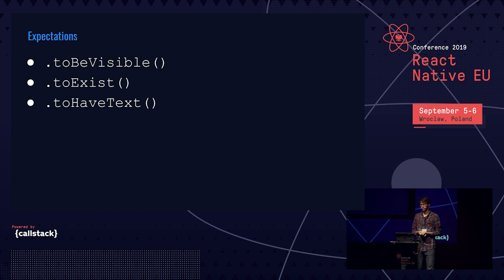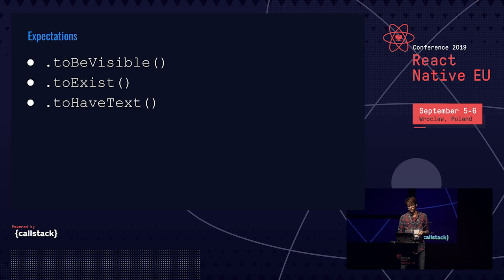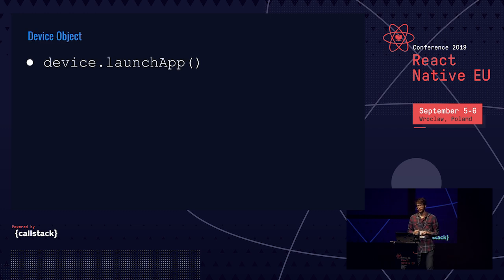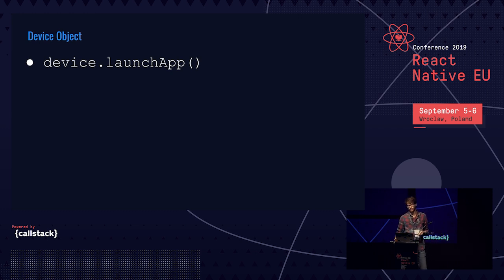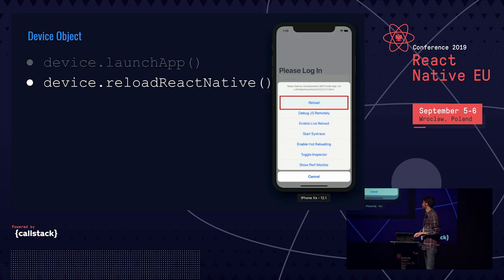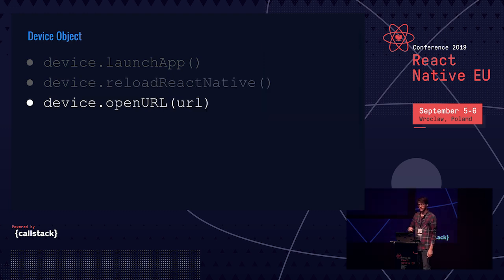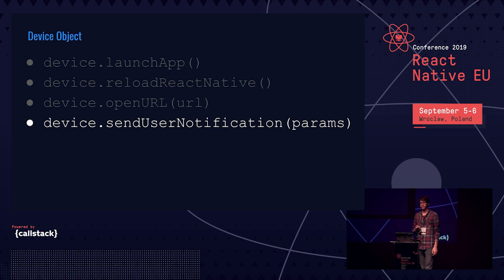There are also expectations: you can expect elements to be visible, to exist somewhere on the screen, or to have certain text. There's also the device object, which exposes useful functionality like launching the app, reloading React Native — the same as the item in the dev menu — open URL for deep linking, and send notification for push notifications.